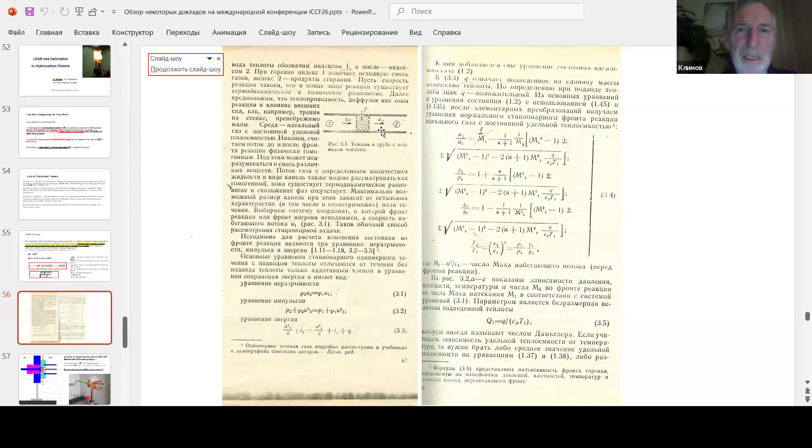There's a tube, there's a flow from the left, then there's a zone where you supply energy Q, and after the reaction, there's the reacted mixture, there's H2O, and it moves at speed 2. So, it would seem that if you have a detonation wave, then you can write the conservation laws in the approximation of small losses.